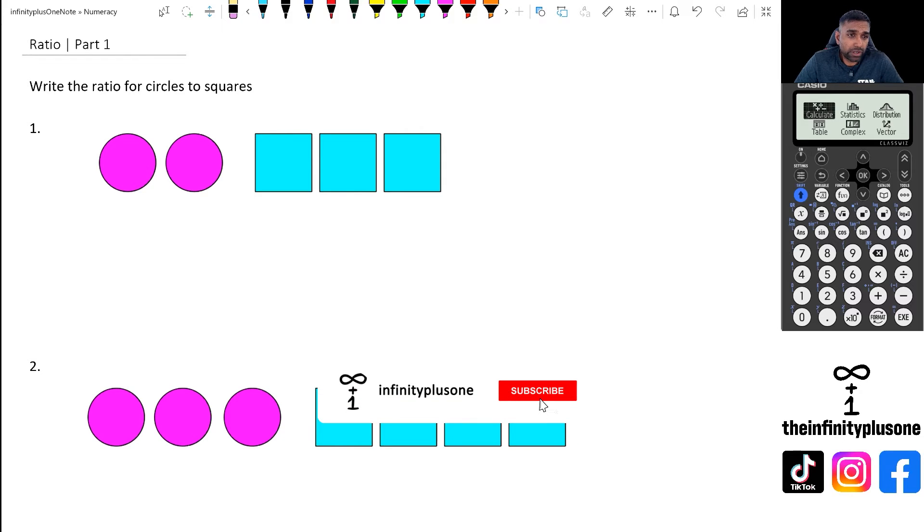What we've got here in terms of ratios for circles to squares is you might have actually not realized this, but you might have already started using ratios. If you think about it, for every one question that you do, you might get two chocolate bars or something like that.